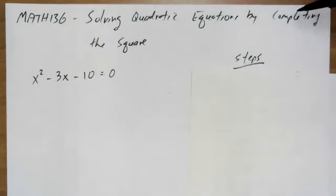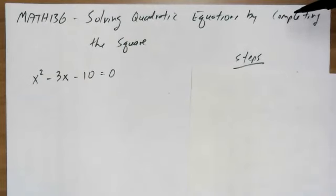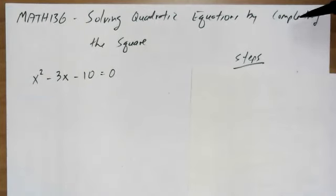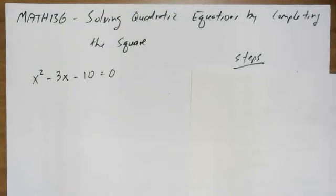In your future math, you will oftentimes use completing the square to do all kinds of different things. So there is this whole technique called completing the square. In this case, we're going to complete the square and then we're going to solve the equation. Later on in other math applications, you will complete the square in order to do other things. So it's good to understand how to do it.